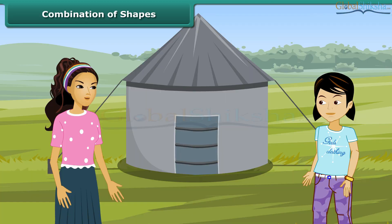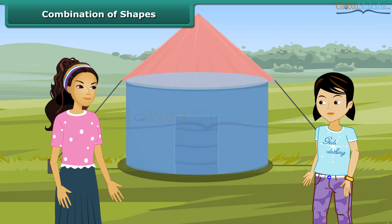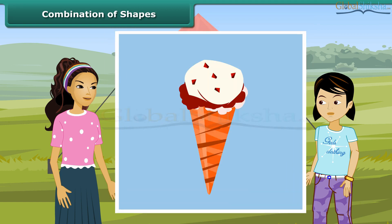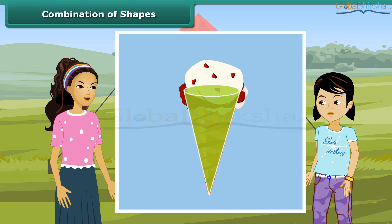Rita, look at this tent. This is made up of two shapes. Can you tell the name of the shapes? Yes — one is a cone and another is a cylinder. Correct. Similarly, we have ice cream — we can see that it is a cone surmounted by a hemisphere.